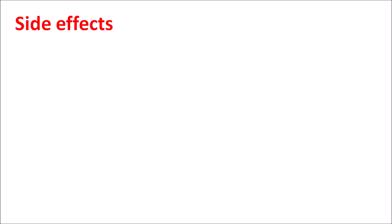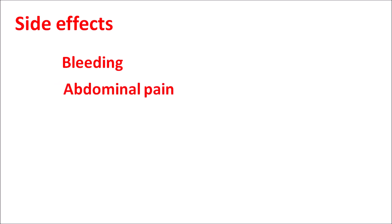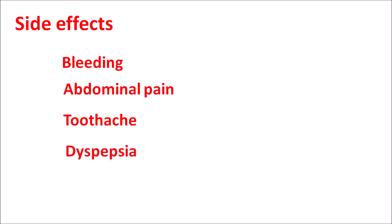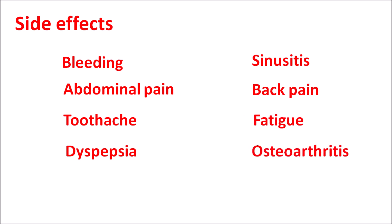Now let us see the side effects of this drug. As we discussed, bleeding is one of the important side effects — it can produce gastrointestinal bleeding as well as cranial bleeding. Apart from hemorrhage, it can produce other side effects like abdominal pain, toothache, dyspepsia, sinusitis, back pain, fatigue, and osteoarthritis joint pain.